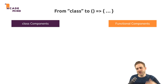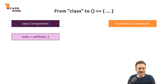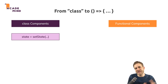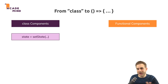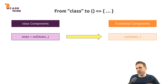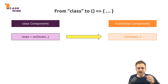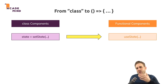Most importantly we have to convert state and setState. In class-based components you use that all the time to update internal data. With React Hooks there's a hook called useState, which is essentially a function you can import from the React package and call in your functional component to manage state.